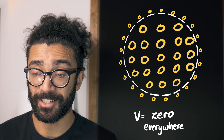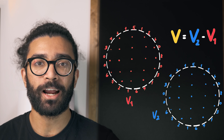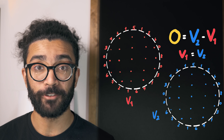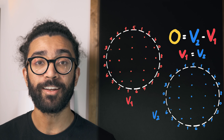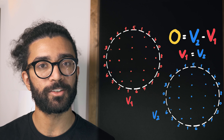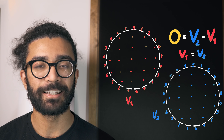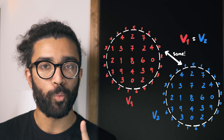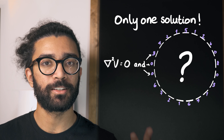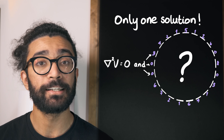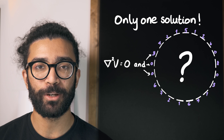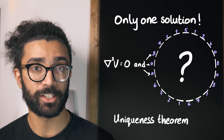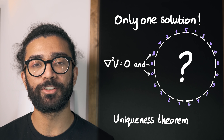That's a pretty useful result. Remember that V was found by subtracting V1 from V2. If V is zero everywhere, then that must mean V2 is equal to V1. In other words, we started by assuming that there were two different solutions to our problem, and we've just proven that those two solutions must be the same as each other — they cannot be different. There is one and only one solution to this problem such that it follows Laplace's equation and satisfies the boundary conditions we set. This proof is known as the uniqueness theorem for Laplace's equation.